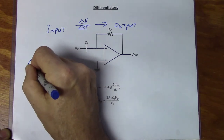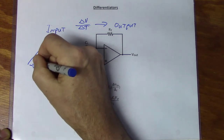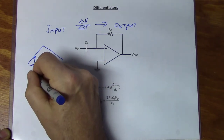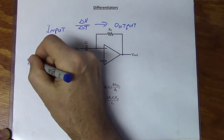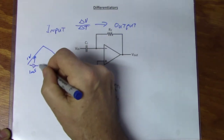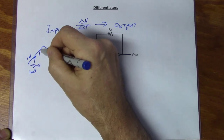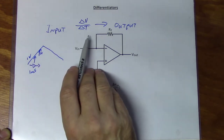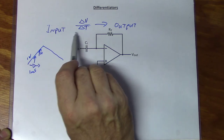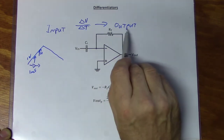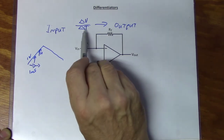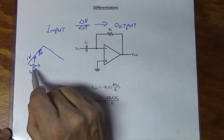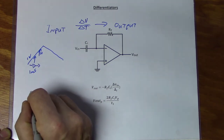For every change in time from one point, we have a proportional change in voltage. Let's say it's a one-to-one relationship: we go over one millisecond and up one volt, then over another millisecond and up another volt, until we reach the peak. So the rate of change is very steady. By our definition, if the input voltage is going up at a steady rate over a period of time, the output voltage is going to be a square wave.